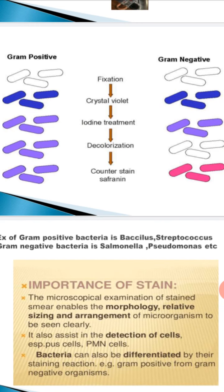After that we add a mordant, which is iodine. After adding iodine, the purple color still remains. What the iodine is doing is acting as a fixative — it is binding with the crystal violet and the cell membrane of these microorganisms and forming a complex.